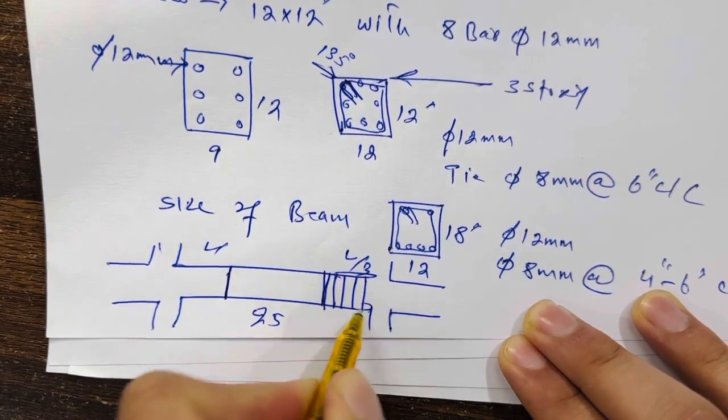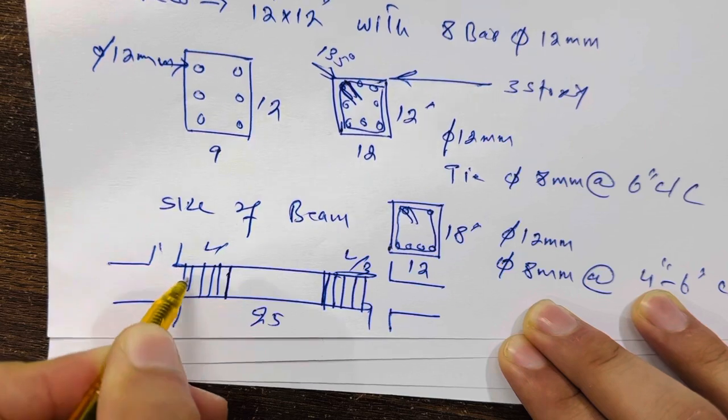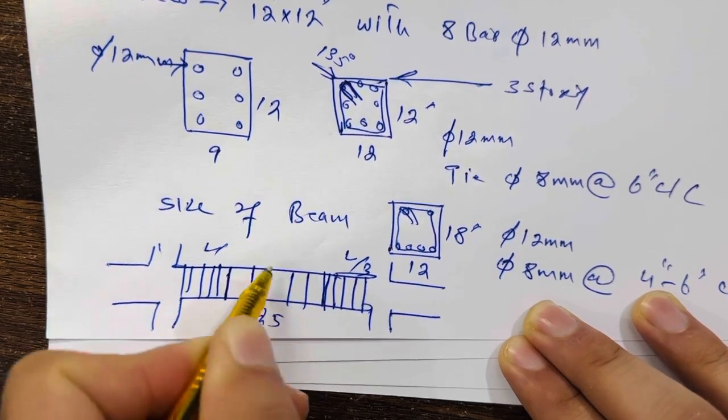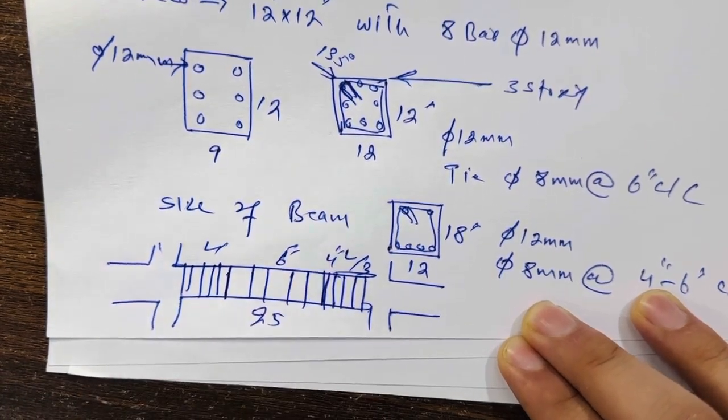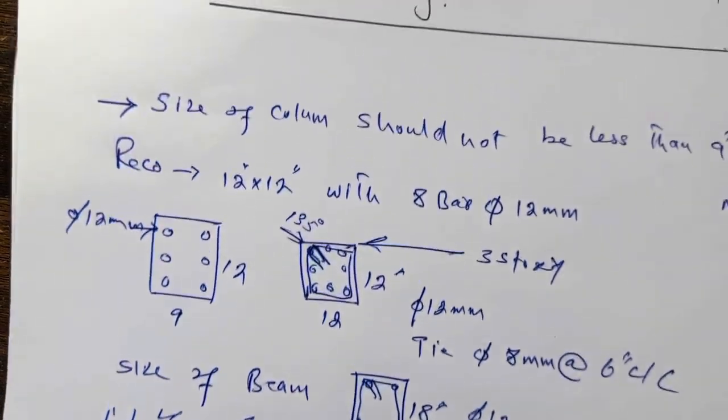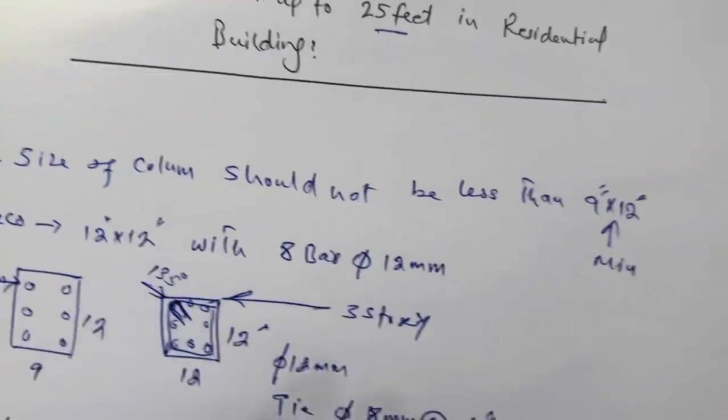So keep the spacing four inches here, and you can increase after L by three to six inches. So here six inches and here four inches center to center. This is very important to know about steel reinforcement.